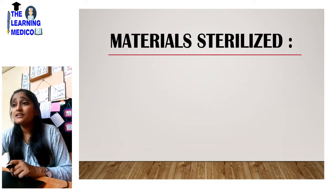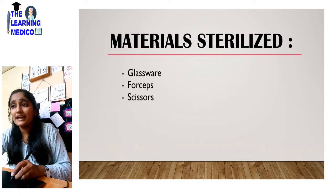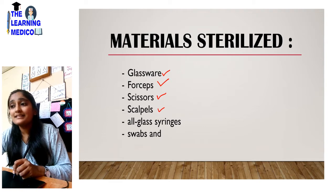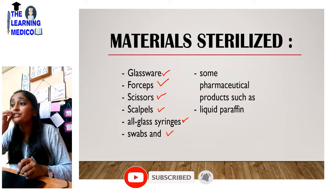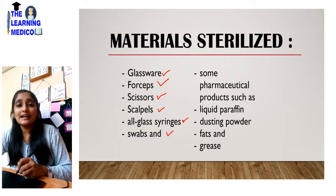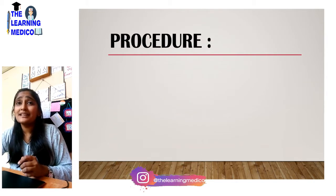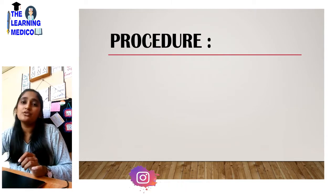Materials sterilized: we can do glassware, forceps, scissors used in surgery, scalpels, glass syringes, swabs, and some pharmaceutical products such as liquid paraffin, dusting powder, fats and grease — we can also sterilize these in the hot air oven. And these cannot be sterilized by boiling or other methods, so the hot air oven is a very useful instrument.